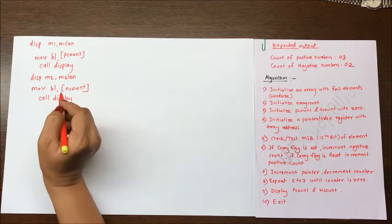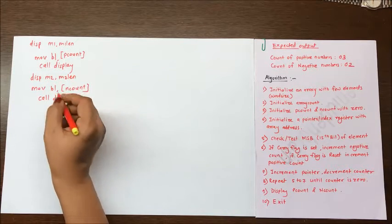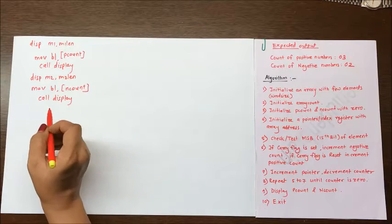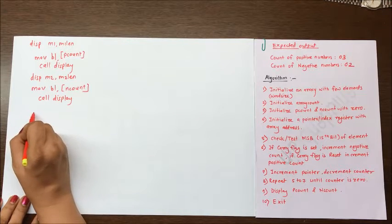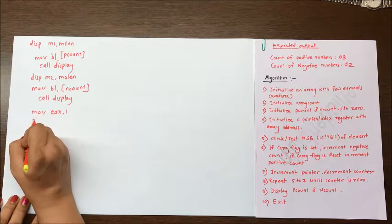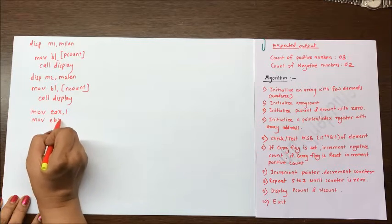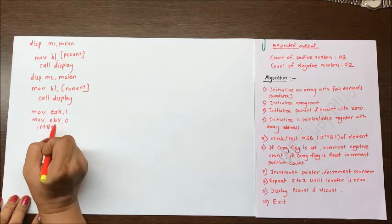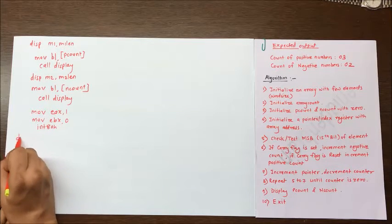After that our program ends here logically it is terminated. So we have to write here exit function which is exit 1, move ebx 0, int 80h. After int 80h we can write down the display procedure.